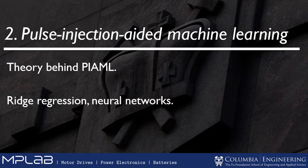We use two types of machine learning: one very basic one, ridge regression, and the more powerful neural network. We're going to compare the two to get a feel for how they differ.